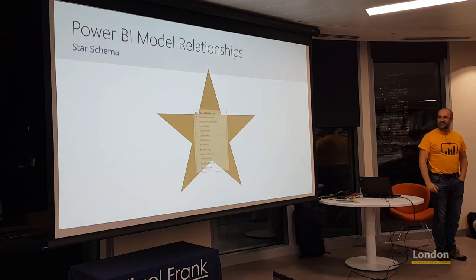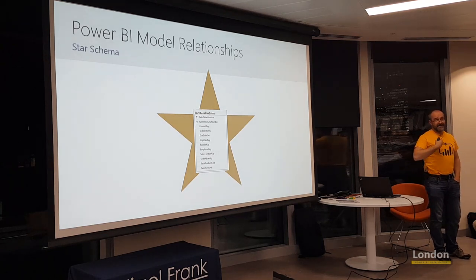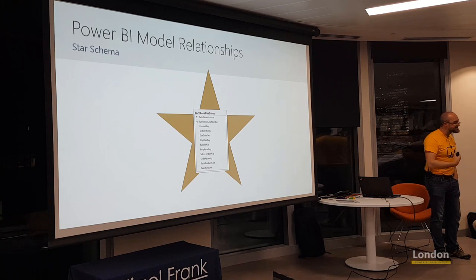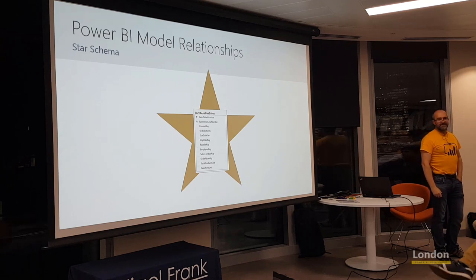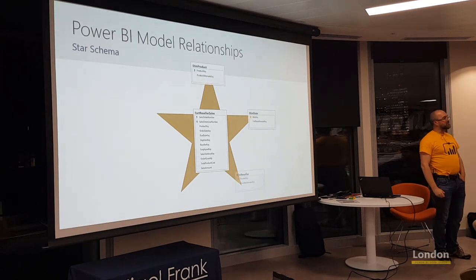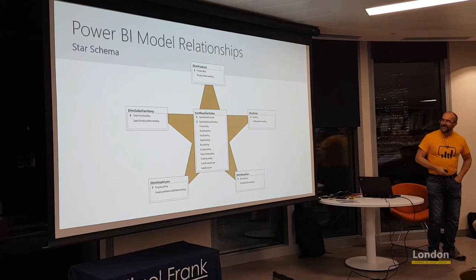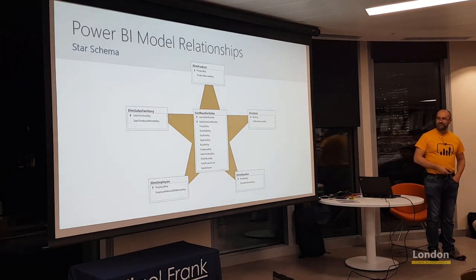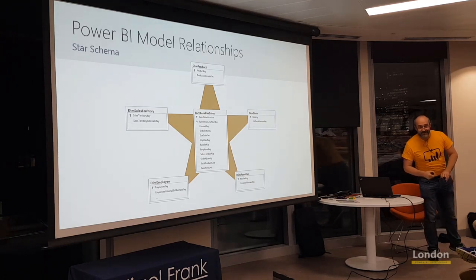Why is it called a star schema? Because that's what a star looks like. At the center is a fact table — it stores the accumulation of business activity, whether sales orders, temperature observations, or exchange rates. These tables are typically quite large and continue to grow. The points of the star are dimension tables — they describe your business entities: products, dates, resellers, employees, and sales territories. This is from the AdventureWorks database.